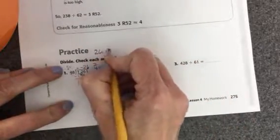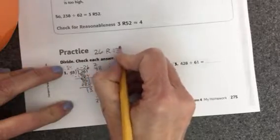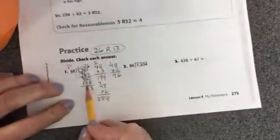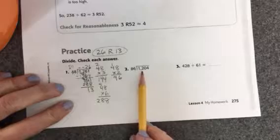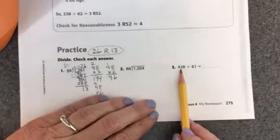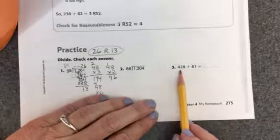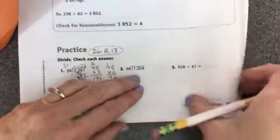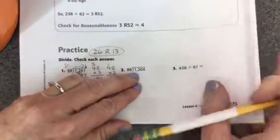So my answer is 26 with a remainder of 13. I'll write it up here: 26 with a remainder of 13, and circle it. Alright, so you're going to do these two. Looking at number 3, you're going to need to write 428 divided by 61 in a division box and then do the same thing.